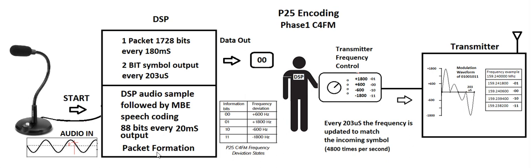After the packet is formed, you need to send it out to the radio. They send out the 1728 bits two at a time, every 203 microseconds. We take the transmitter and adjust its frequency to one of four different levels depending on which combination of two bits we have. So if it's minus 1800, that would represent 1,1.